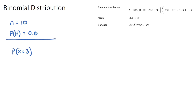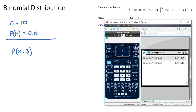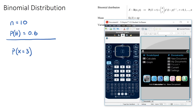You might think that could happen in a bunch of different ways — three heads early on and seven tails, or three heads at the end. There are actually a lot of different ways, and the mathematical formula to find this answer is quite complicated. Luckily, our calculator does a lot of this work for us.